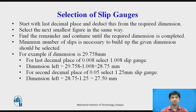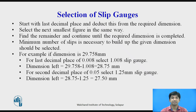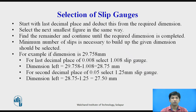Selection of slip gauges: start with the last decimal place and deduct this from the required dimension; select the next smallest figure in the same way; find the remainder and continue until the required dimension is completed. The minimum number of slips necessary to build up the given dimension should be selected. For example, if the dimension is 29.758 mm, for the last decimal place of 0.008, select the 1.008 mm slip gauge.